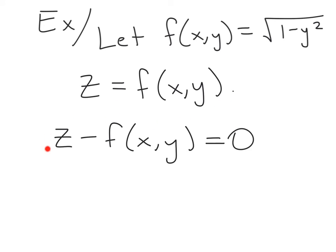I can rearrange this equation by subtracting f of x, y from each side so that this equation actually becomes z minus f of x, y is equal to 0. Now, on the left-hand side, I have a function of x, y, and z, and on the right-hand side, I have a constant.